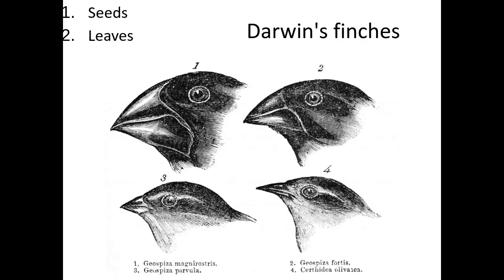The finches all eat different things and have different beak sizes suited to their particular niche. Because they've adapted in this way, they are no longer able to breed together to produce fertile offspring.